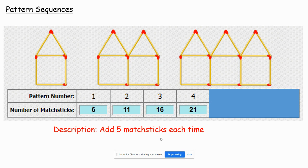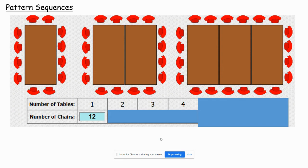Okay, so it doesn't always have to be to do with matchsticks. It can be to do with other things as well. So we've got here some chairs and tables. You can see if you've got one table, then you can get 12 chairs around it.